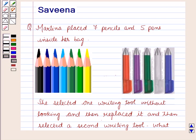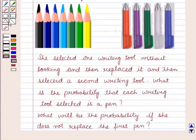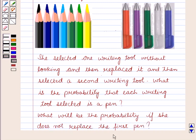Hello and welcome to the session. In this session we will discuss a question which says that Martina placed 7 pencils and 5 pens inside her bag. She selected one writing tool without looking and then replaced it and then selected a second writing tool. What is the probability that each writing tool selected is a pen, and what will be the probability if she does not replace the first pen?